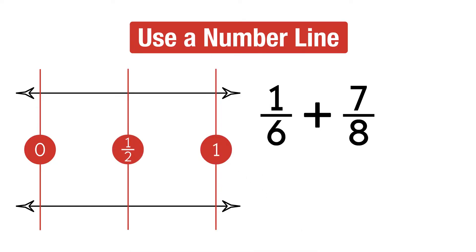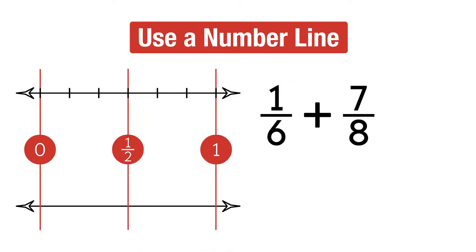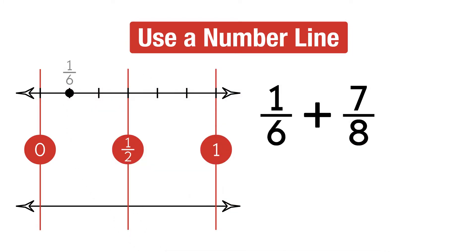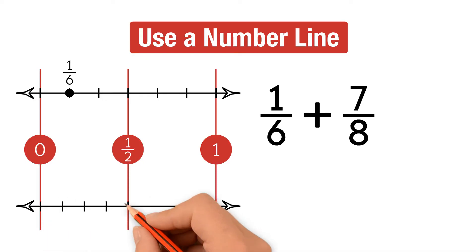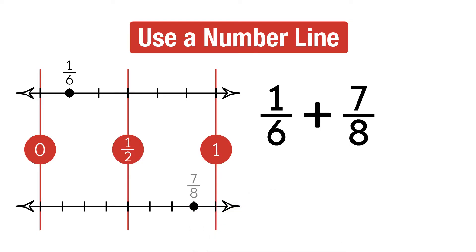We divide the first number line into 6 parts, then we find 1 sixth on the number line. We divide the second number line into 8 parts, then we mark 7 eighths on the number line.